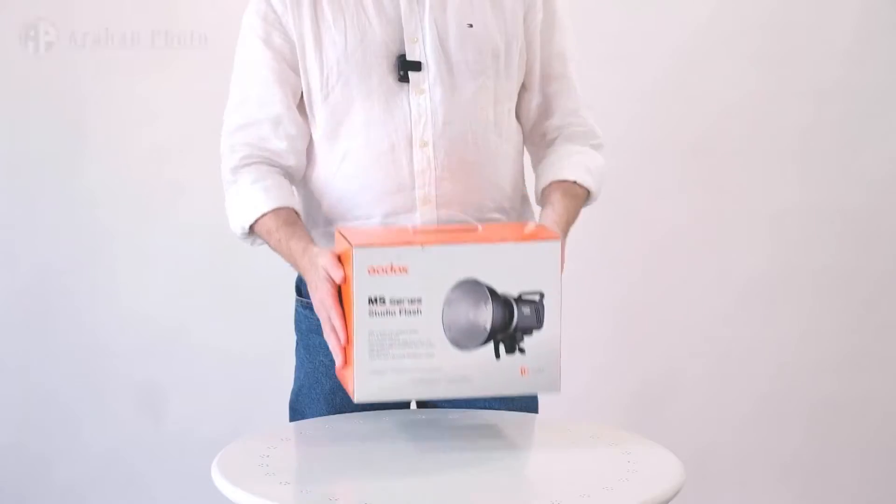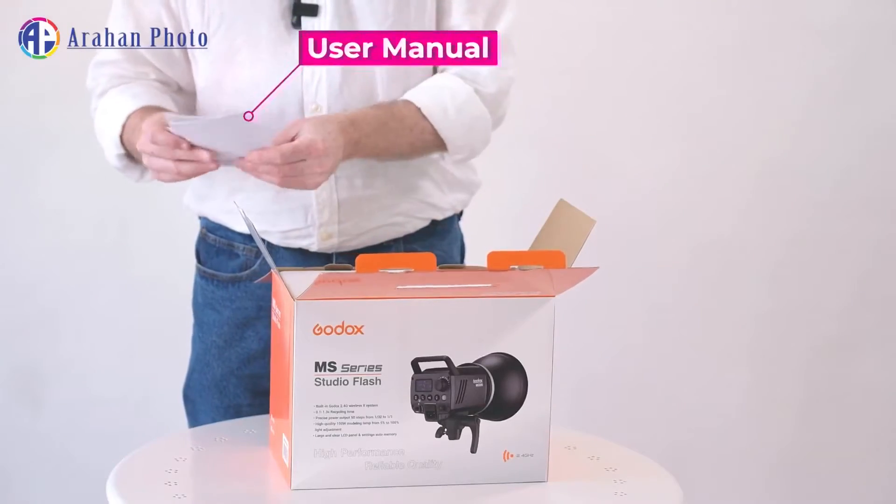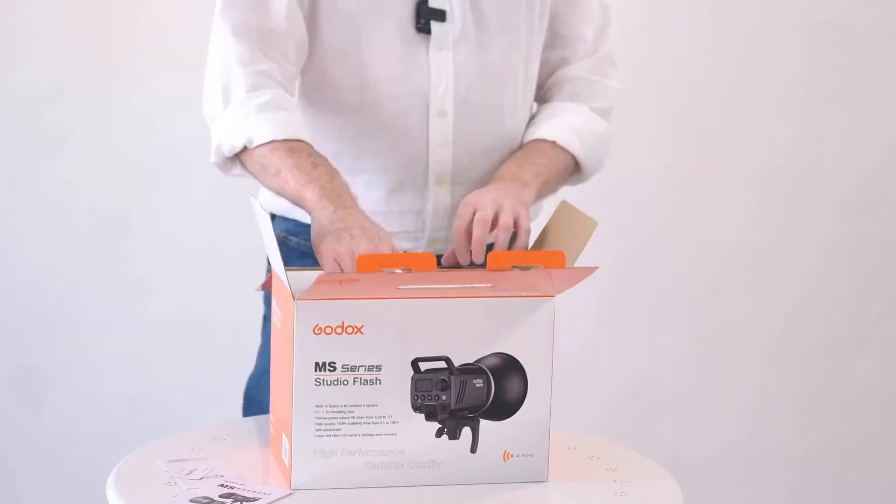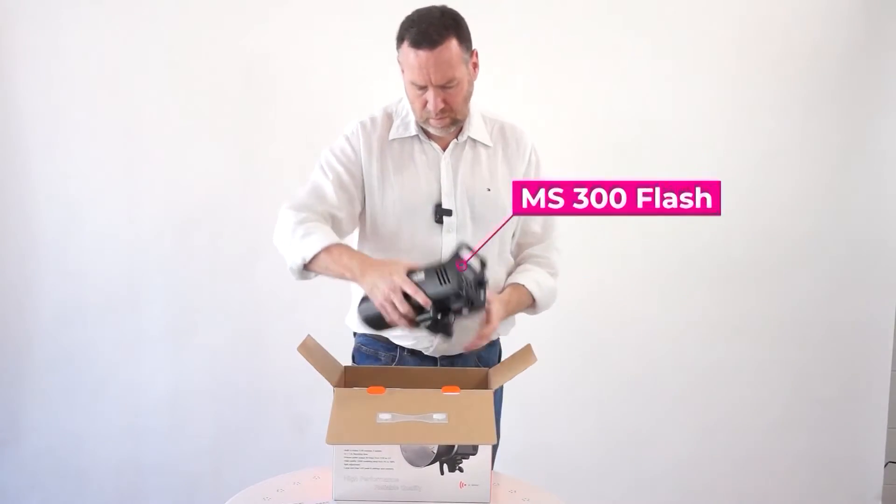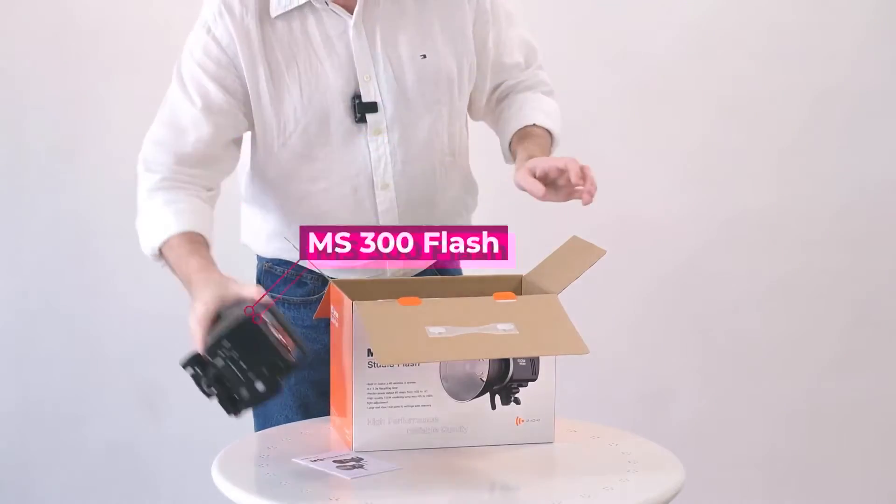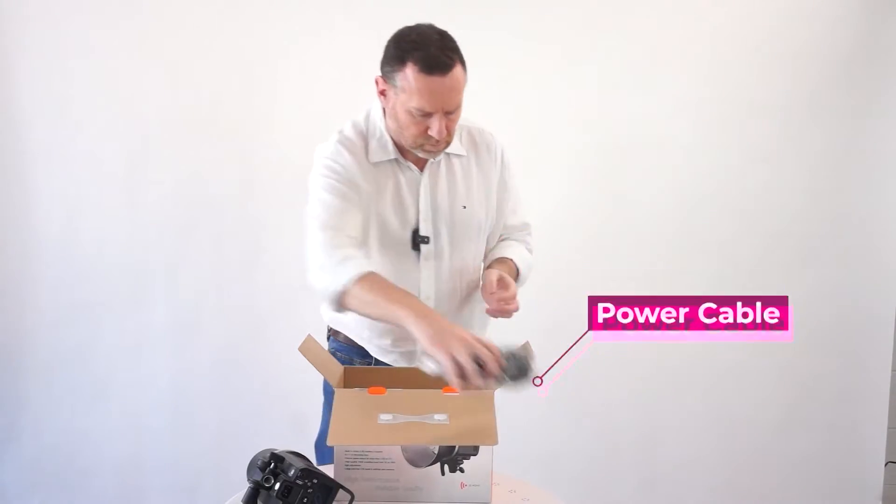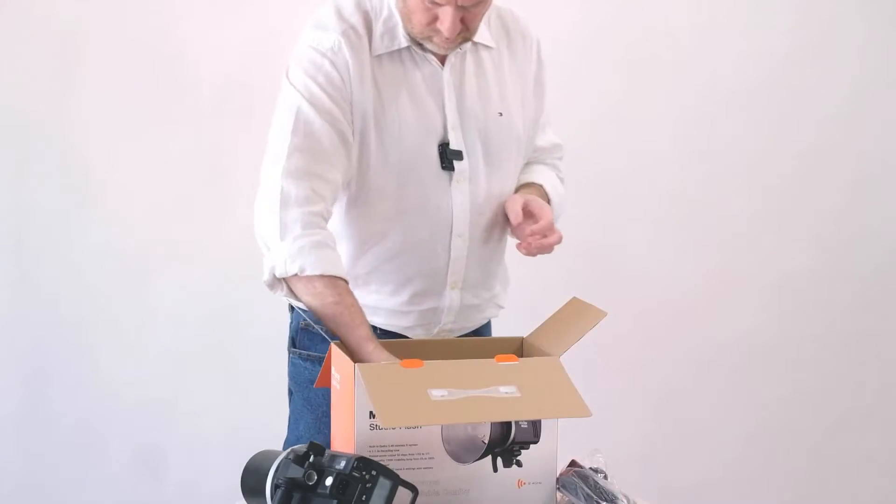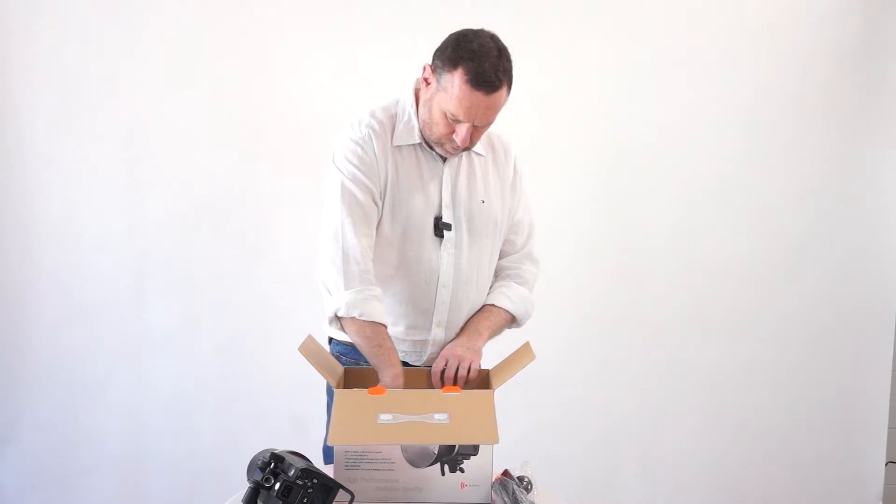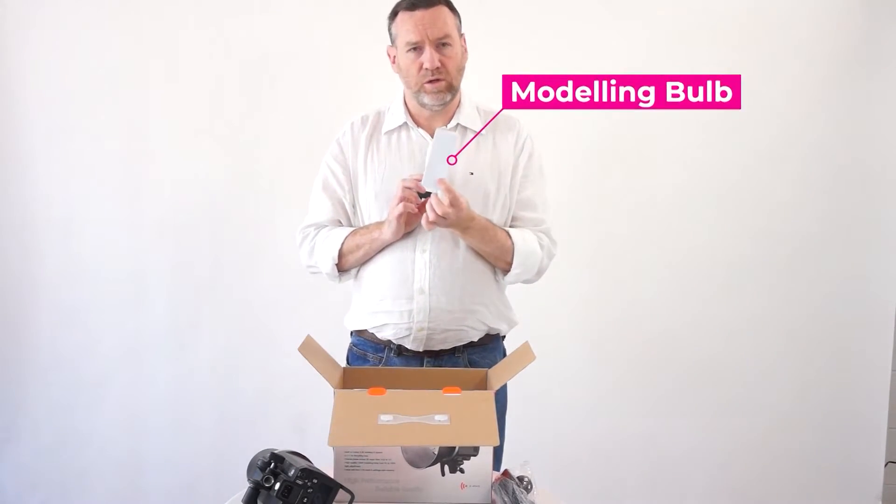Okay so let's get this thing out of the box and see what's in there. So the usual paperwork, small manual in here. We have the MS 300 itself. An Australian power cable. A couple of fuses and we have a bulb for the modelling light on this unit.